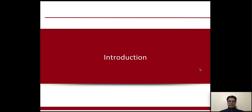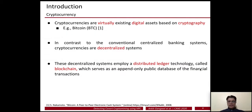Let's begin with a quick introduction. Cryptocurrencies are virtually existing digital assets based on cryptography — one of the most popular examples is Bitcoin. Cryptocurrencies are decentralized systems that employ a distributed ledger technology called blockchain.